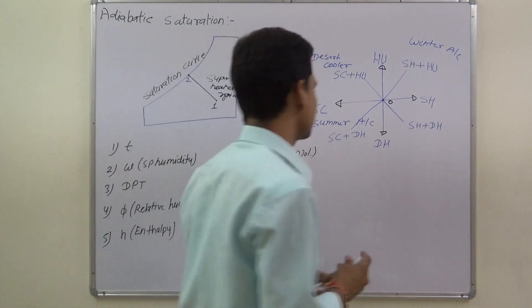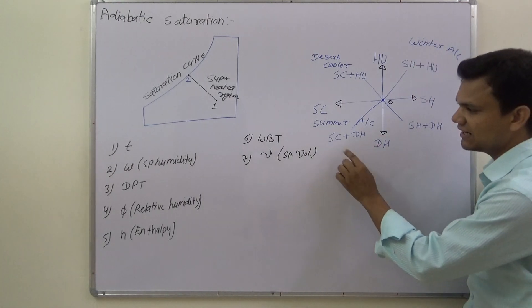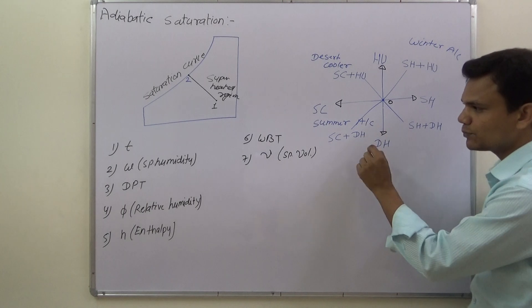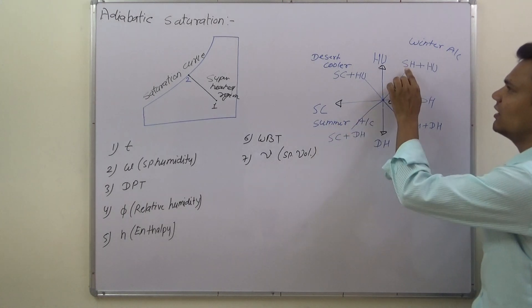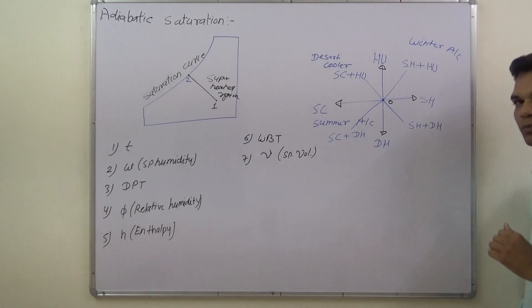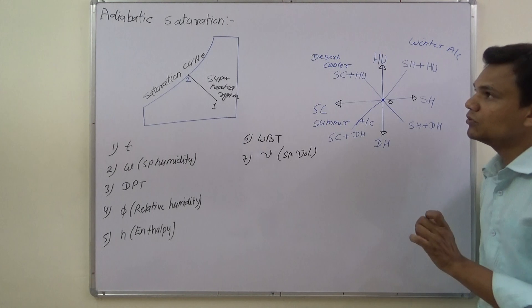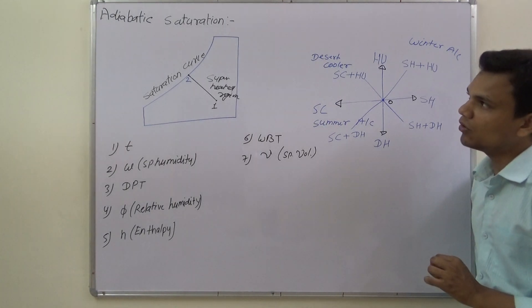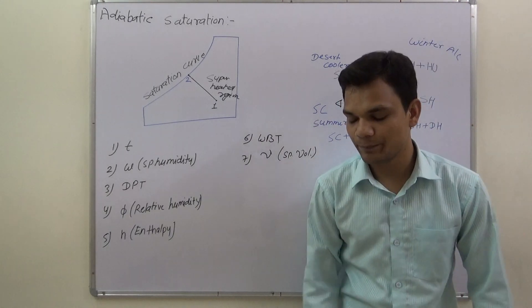Other processes that occur on a psychrometric chart: sensible cooling plus dehumidification occurs in a summer air conditioner, and sensible heating plus humidification occurs in a winter air conditioner. Now let us discuss adiabatic saturation.